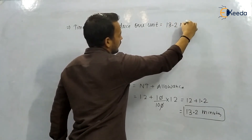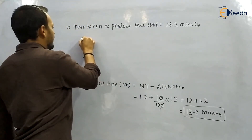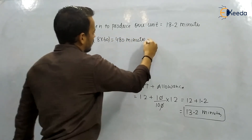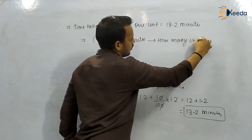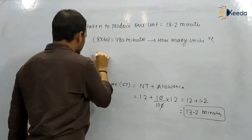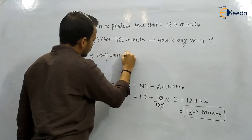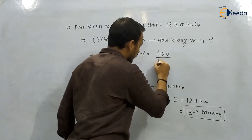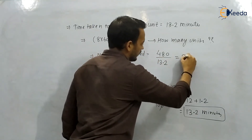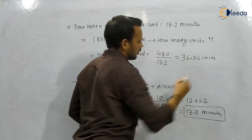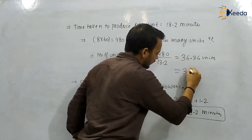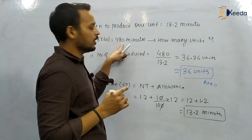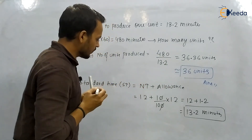Time taken to produce one unit is 13.2 minutes. In 8 hours, that is 480 minutes. Number of units manufactured = 480 ÷ 13.2 ≈ 36 units. So approximately 36 units will be produced in an 8-hour or 480-minute shift.